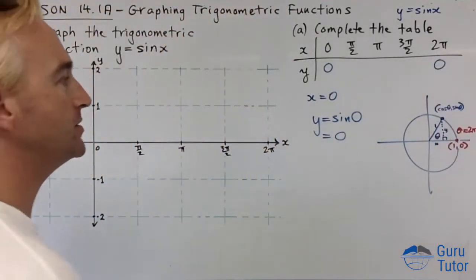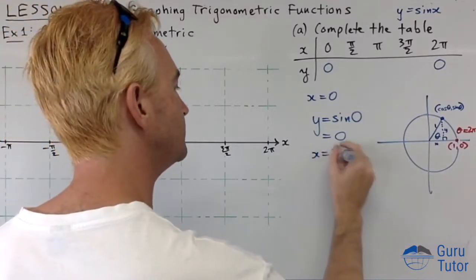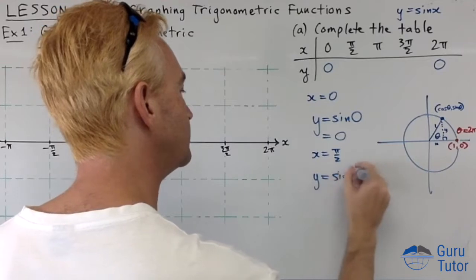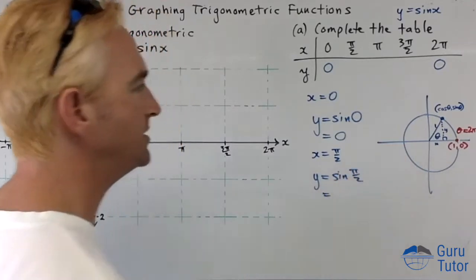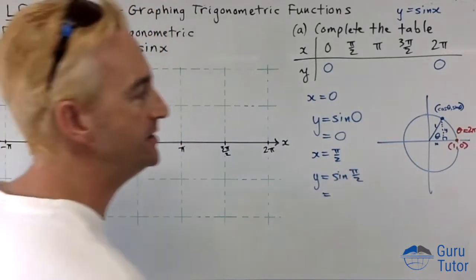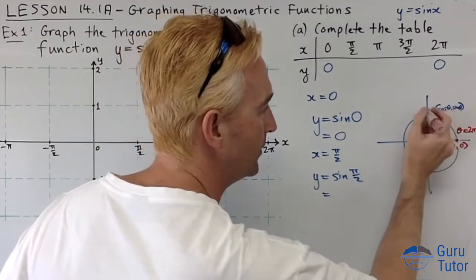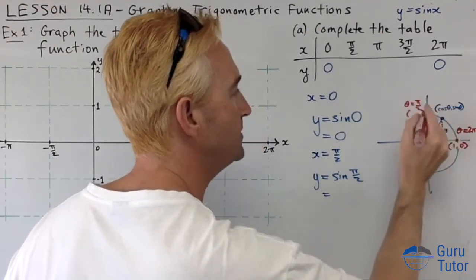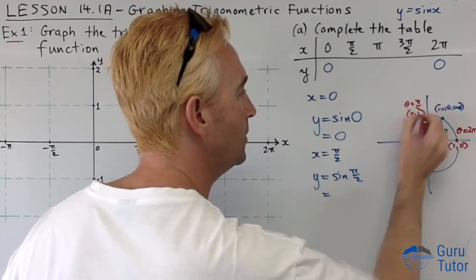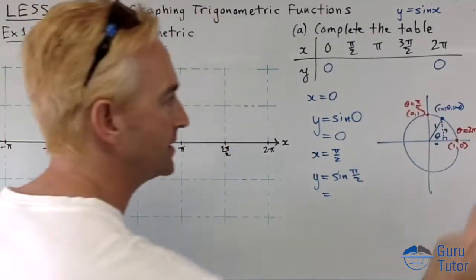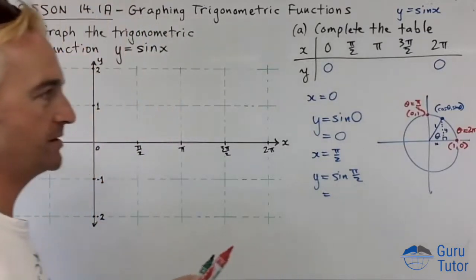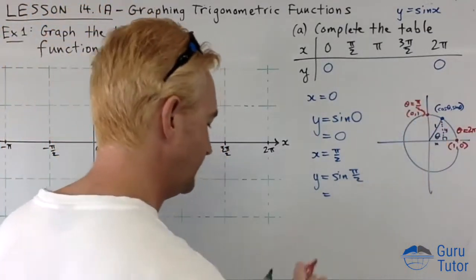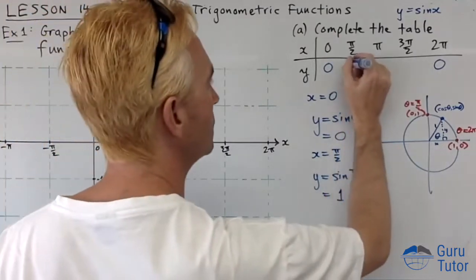Now what about π/2? When x is π/2, y equals sin π/2, which is sin 90. What's sin 90? At 90 degrees we are here. When theta is π/2, we're up here. What are the coordinates at this point? That is 0, 1. The sin is the y value, so sin π/2 is going to be 1.